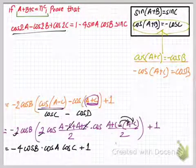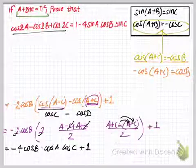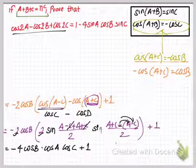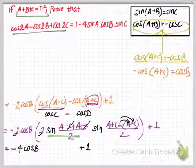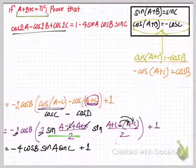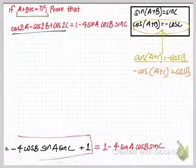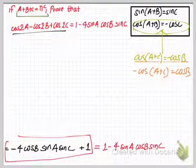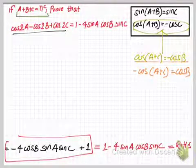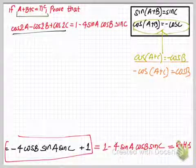Oh, sorry — here it should be sine, not cosine. So here we have sin A and then we have sin C. After rearranging this term we have 1 minus 4 sin A times cos B times sin C, and this is our right hand side — this is what we had to prove in this question. I hope it's clear to you, and thanks for watching.